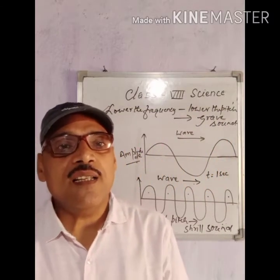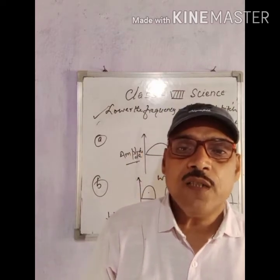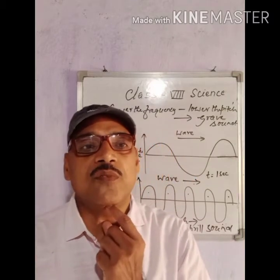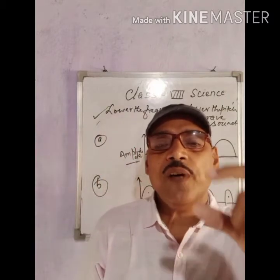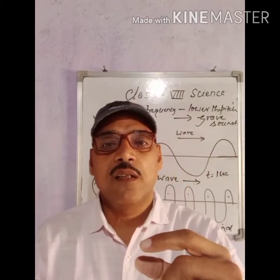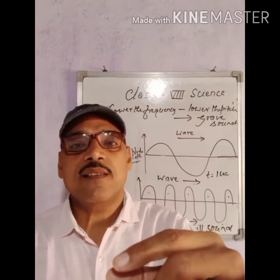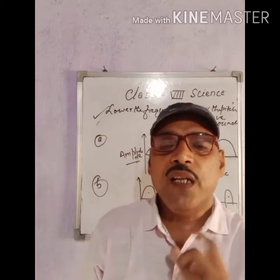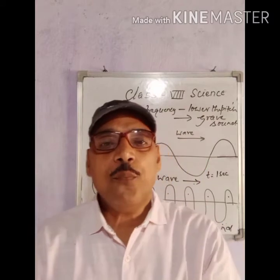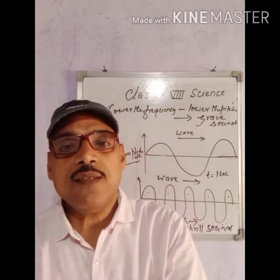Students, the voice of children and ladies is shrill compared to the voice of men. It is because the vocal cords of ladies and children are small, which vibrate more fast, producing high frequency, high pitch, and shrill sound. On the other hand, men have long vocal cords which produce low frequency, low pitch, and the sound is grave.